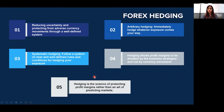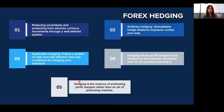To reiterate our starting statement of whether Forex hedging is the art of predicting markets or the science of protecting profit margins — Forex hedging includes a well-defined body of knowledge and is objective, where the goal is to protect the profit margins by reducing uncertainty related to rates. It allows profit margins to be dictated by business strategies and not by currency movements. Hence, it is the science of protecting profit margins rather than an art of predicting markets.